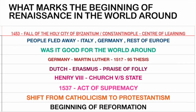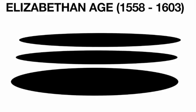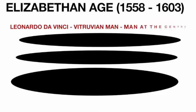The Renaissance reached England between 1558 and 1603, with Queen Elizabeth on the throne. Queen Elizabeth's period is also called the golden period of literature. During this time, there was an individual by the name of Leonardo da Vinci — a very famous painter — who created the painting known as the Vitruvian Man.